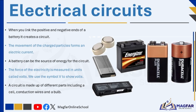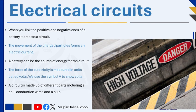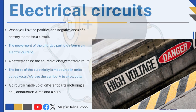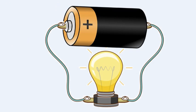A battery can be the source of energy for the circuit. A cell has stored energy, or energy waiting to be transferred. The force of electricity is measured in units called volts, and we use the symbol V to show volts. Try to look for different cells in your home to see what their voltage is. Here is a picture of a circuit — electricity flows because the battery, the wires, and the light bulb are all connected to form a closed loop, and the light bulb is glowing.